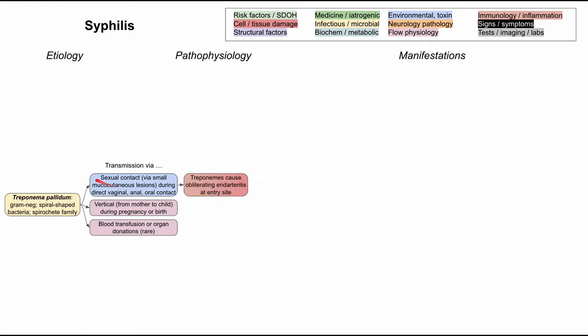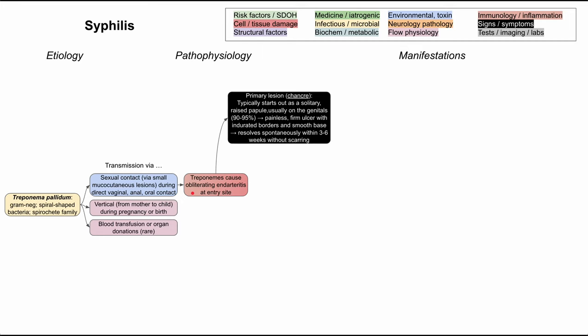When you transmit syphilis through sexual contact, the treponemes — that's the bacteria — they cause an obliterating endarteritis at the entry site. This is what causes the primary lesions, also called the syphilis chancres, and this is the manifestation of primary syphilis.